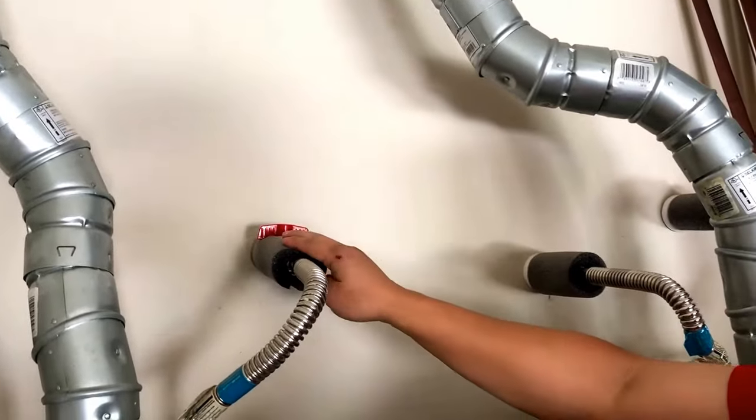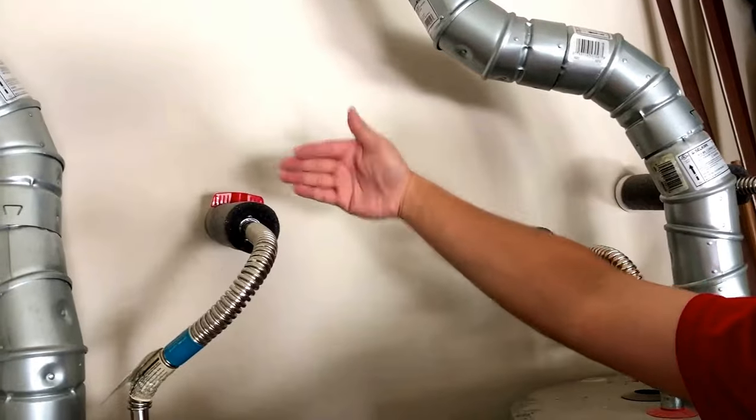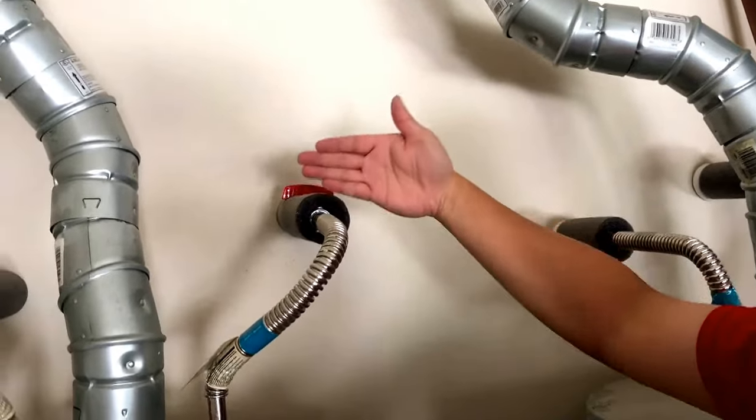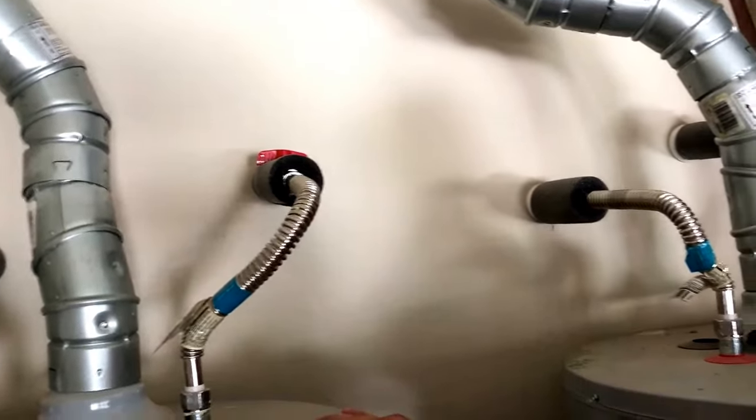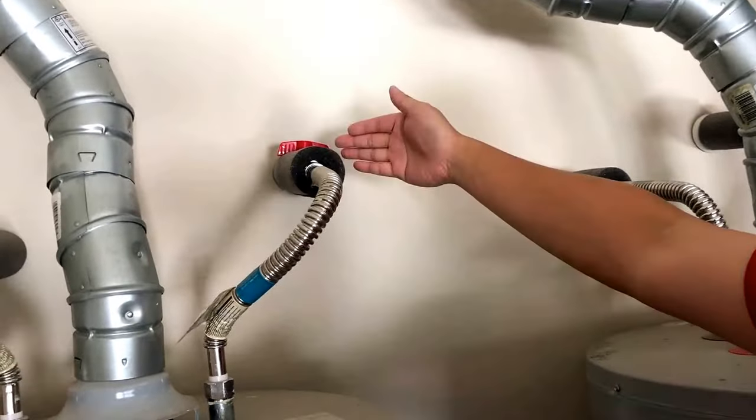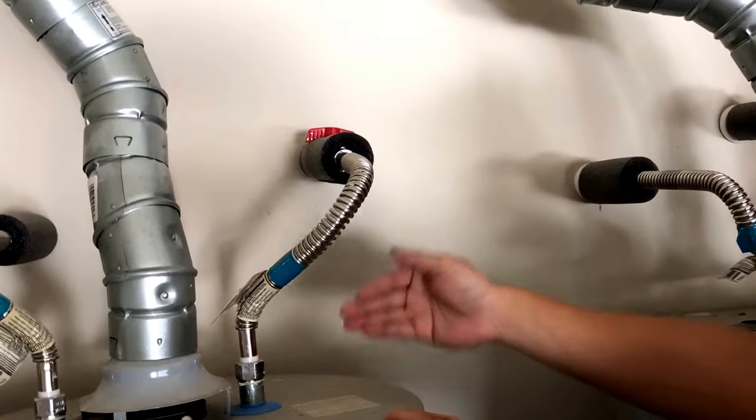So if I turn the valve perpendicular like that, it's blocking the water. Inside the pipe there is a block, so there is no water flowing through right now because of that valve.